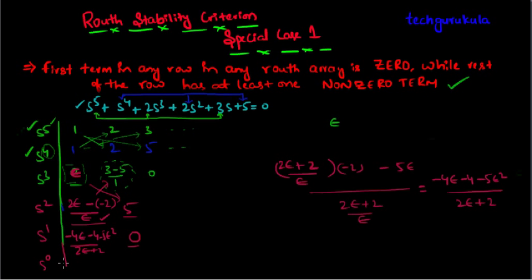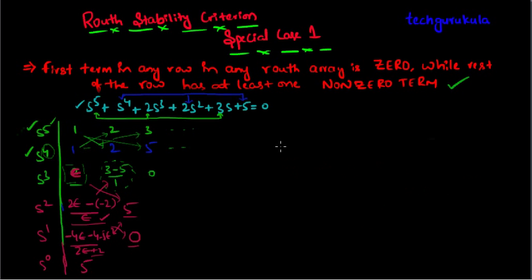And if we take S power 0 value here, it will be this times this minus this times this divided by this, which will be 5 here. Let me rewrite the first column here in order to make this clear: S power 5, S power 4, S cube, S square, S power 1, S power 0.